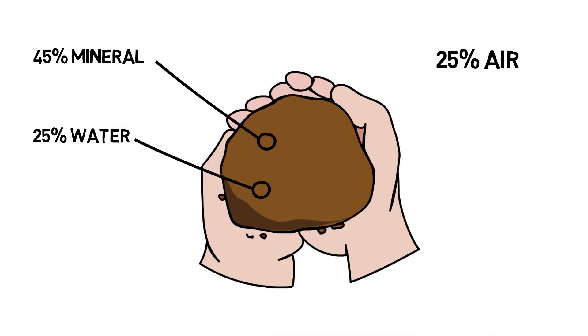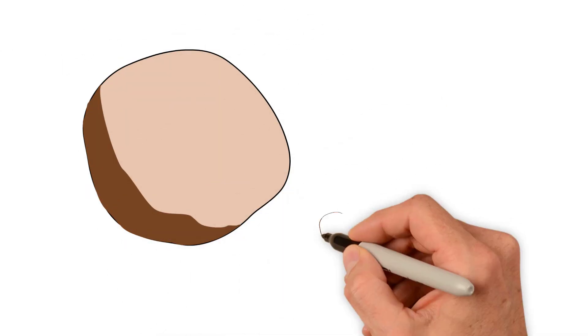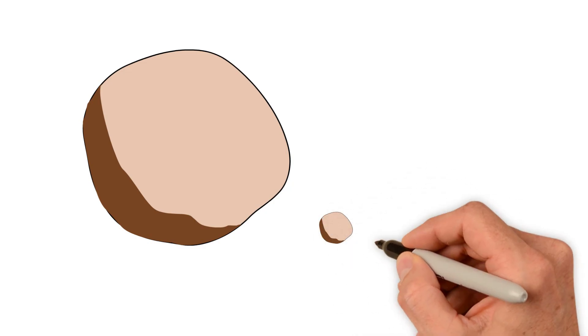The remainder of what you're holding is in equal parts of water and air. Each is about 25%. And lastly, there's usually an average of about 5% organic matter. Within that mineral fraction or the solid fraction of the soil, there are different particle sizes. And I'm sure these terms will be familiar to you.